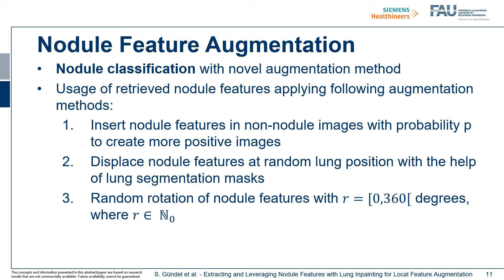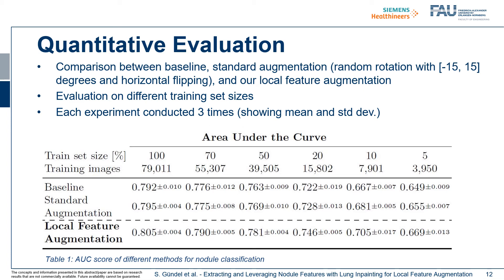With the explained augmentation approach, we can retrain the classification network. Here we can see the quantitative evaluation. We compare the baseline model — a classification network trained without any augmentation — against standard augmentation, which means random rotation between minus 15 and 15 degrees and horizontal flipping, and our explained local feature augmentation. We evaluated on different training set sizes, and conducted each experiment three times to show mean and standard deviation. On all experiments, we can see that standard augmentation slightly improves performance compared to the baseline; however, our local feature augmentation significantly improves on all different training datasets.